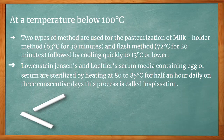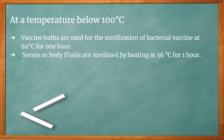Löwenstein-Jensen and Löffler serum media containing egg or serum are sterilized by heating at 80 to 85 degrees Celsius for half an hour daily on three consecutive days. This process is called inspissation. Bacterial vaccines are sterilized at 60 degrees Celsius for one hour in vaccine baths, while serum or body fluids are sterilized at 56 degrees Celsius for one hour.